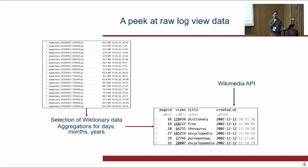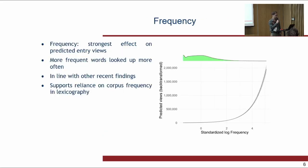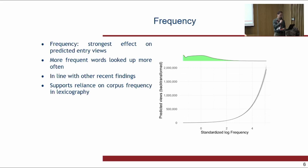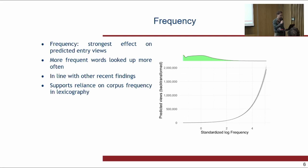I'll show you some results we already published as a preprint. Frequency still has, by far, the strongest effect on predicted entry views — the more frequent the word, the more often it is looked up. This is in line with other recent findings, including research on an English-Swahili dictionary and German dictionaries. You could say this supports the reliance on corpus frequency in lexicography.